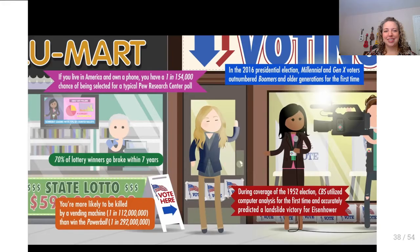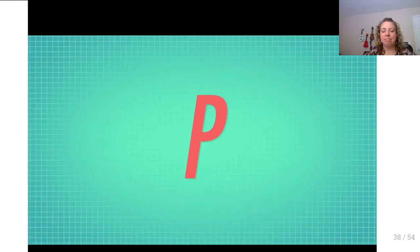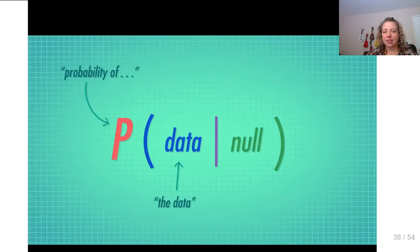To calculate a p-value, we first assume the null distribution is the true distribution our sample was taken from. Then we calculate how often we'd see a value at least as extreme as our observed value. The p-value is the probability of getting a sample as or more extreme than ours, given that the null hypothesis is true. All values in the sampling distribution are means we could actually get if the null hypothesis were true.